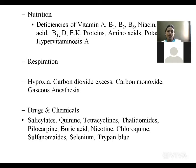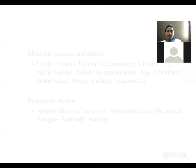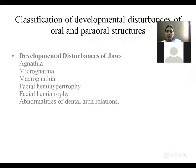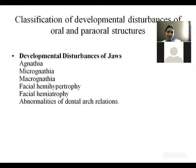These are all the etiological factors. Then we discuss the classification of hard tissue developmental disturbances of the jaw: agnathia, micrognathia, macrognathia, facial hemihypertrophy, facial hemiatrophy, and abnormalities of dental arch relation.